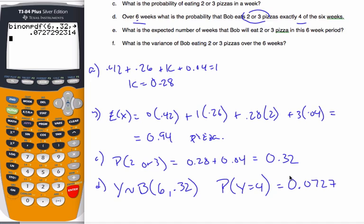So about 7% of the time will this happen that I eat four weeks of two or three pizzas. E now has expected value, number of weeks that Bob will eat two or three pizzas in the sixth week.